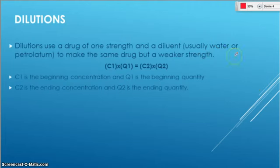Last thing that we're going to talk about is a formula for dilutions. Dilutions means we're going to take something of a certain concentration, a certain strength, and we're going to make it weaker by adding something to it. Usually it's water or petrolatum. So if it's a liquid, we're going to add water. If it's a solid, we're going to add petrolatum.